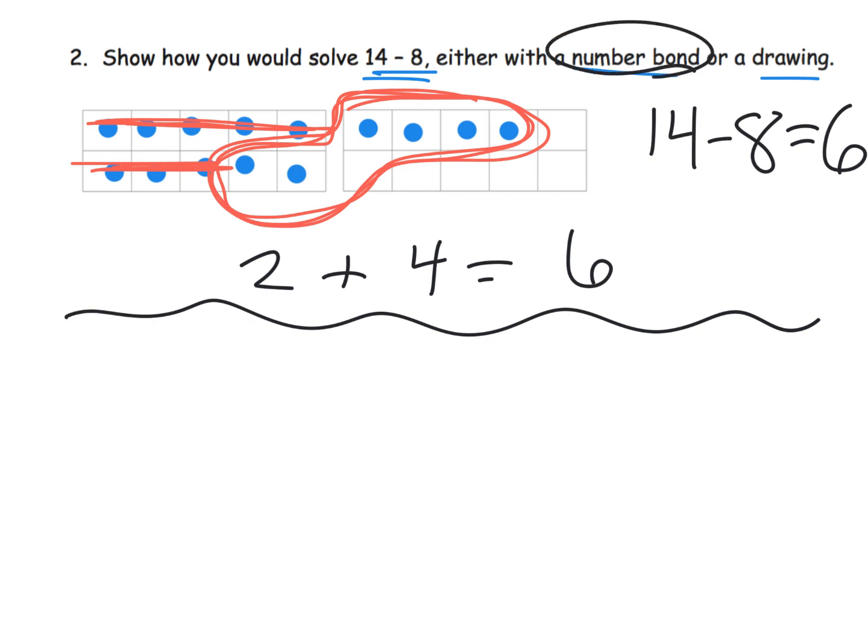So what would the number bond look like? Well the number bond would look like one way to do it is I'm gonna put 14 here and I'm gonna subtract from 10. So I'm gonna decompose so that we've got a 4 and a 10. So of course we want our first graders to recognize that 14 is decomposed as 4 and 10. And I'm gonna squeeze in here minus 8.